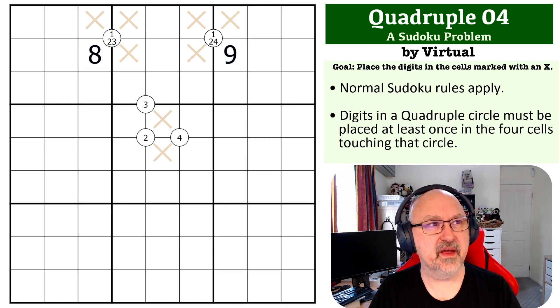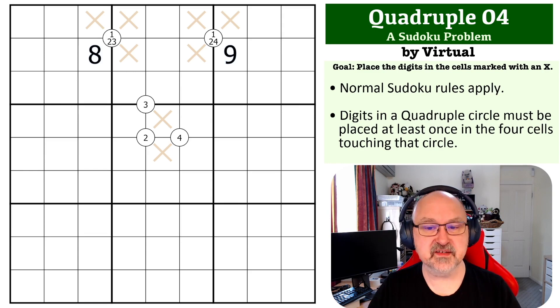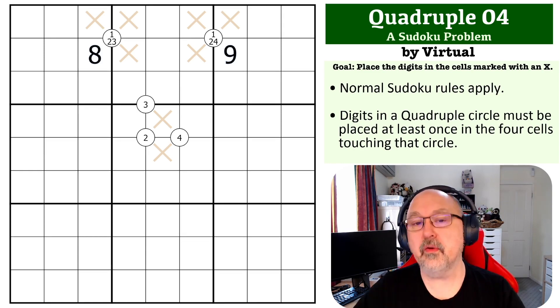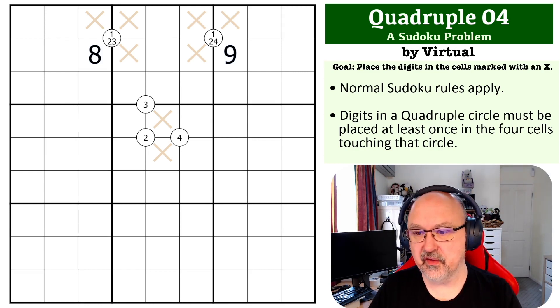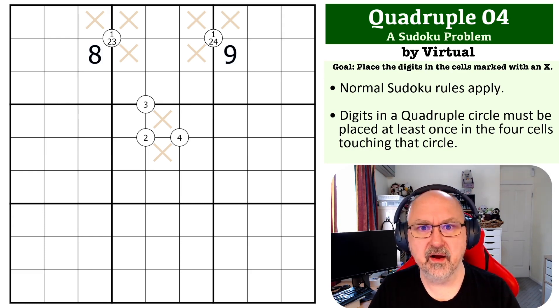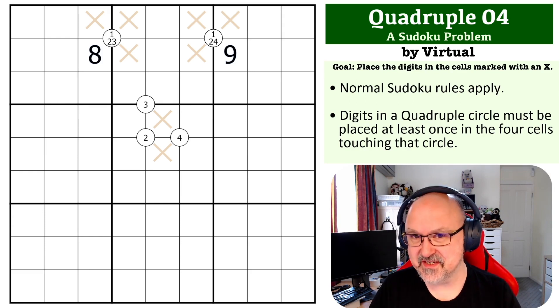Anyway, less about Virtual, more about the problem. The goal on this one is to put digits in the cells marked with an X. You don't need to worry about any of the other locations. I've been getting some feedback on that - there's inconsistencies on other cells. The only thing you need to do is place digits in cells marked with an X.